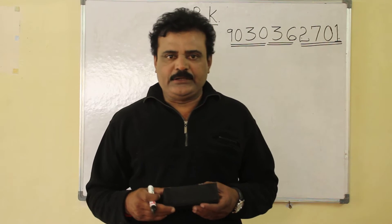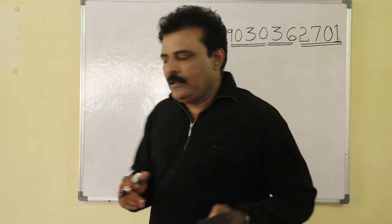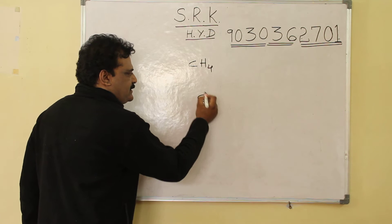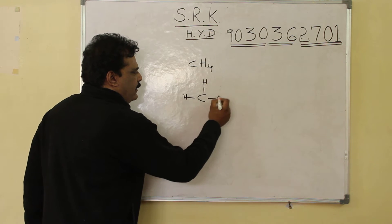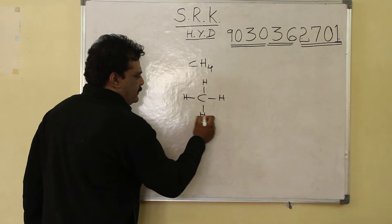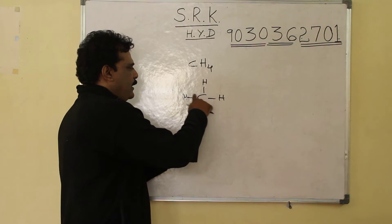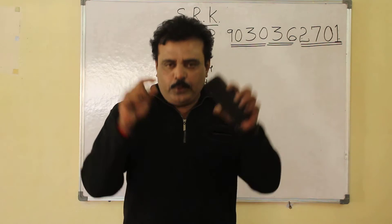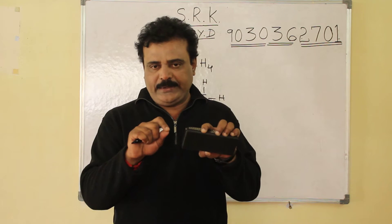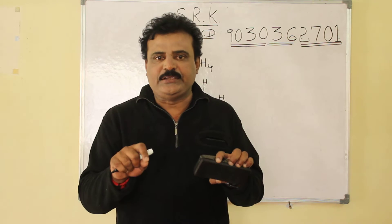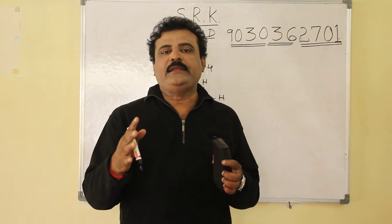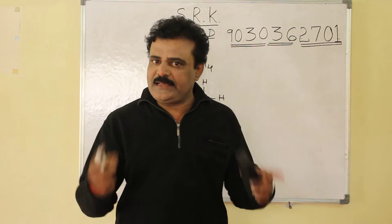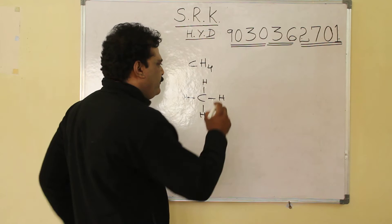Today our topic is methane chlorination. Methane has the molecular formula CH4. Methane chlorination means you react a methane molecule with chlorine. Methane halogenation refers to reaction with halogens — fluorine, chlorine, bromine, iodine — and these belong to the halogen group. Methane chlorination and methane halogenation are essentially the same reaction.